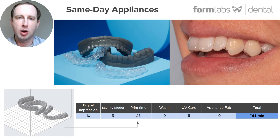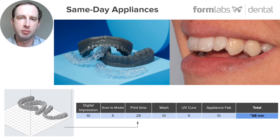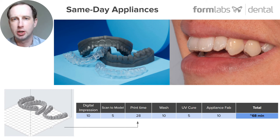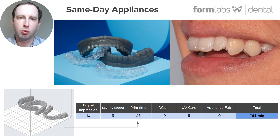Scan to Model fits really well with our new Draft material and resin. As you can see here, I have an example of how the time breaks out. A digital impression is maybe about 10 minutes; scan the model and setting up the job, another five; print time — even on three models — is 28 minutes; wash 10 minutes; cure 5 minutes; and appliance fabrication around 10 minutes. That's a total time of about 68 minutes, give or take. This can allow for a streamlined workflow for these high-value same-day appliances when they're needed.